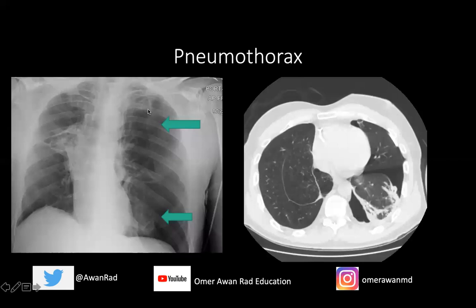It's very easy to diagnose on an x-ray. There's usually a sharp line that demarcates the normal lung — you can see vascularity and the bronchovascular bundle running through this lung. Then there's an area that becomes extremely dark or hyperlucent — this is all air. This interface between the normal lung and air is the pneumothorax. You can see a nice sharp demarcation between the lung and the pneumothorax, whereas on the other side you can see the bronchovascular bundle going all the way to the periphery of the lung.